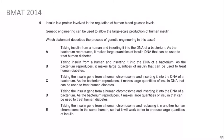Let's go through each option. Option A says taking insulin from a human and inserting it into the DNA of a bacterium — that's wrong, because insulin is a protein and you can't insert a protein into DNA; you can only insert DNA into DNA. Option B says essentially the same thing, so it's also wrong. Option C says taking the insulin gene — that's better — but then says the bacteria makes large quantities of insulin DNA, which is wrong; you want the insulin protein, not more DNA.